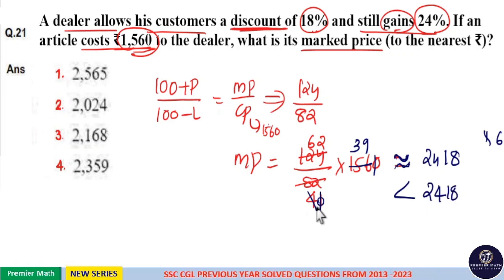This is nearly 2418 but less than 2418. Because we have assumed 41 as 40, this is less than 2418 and nearly 2418.